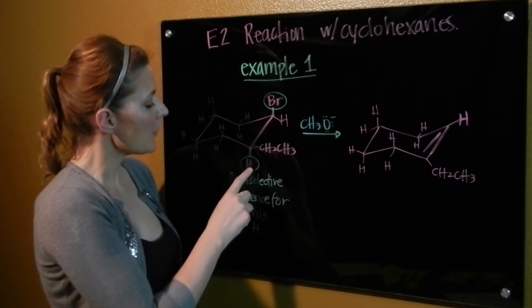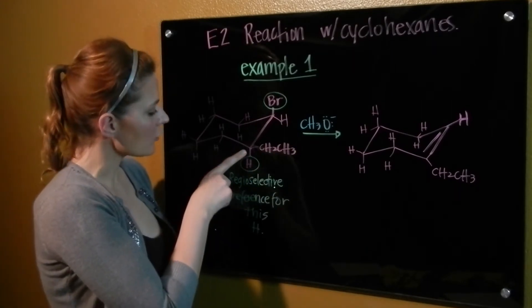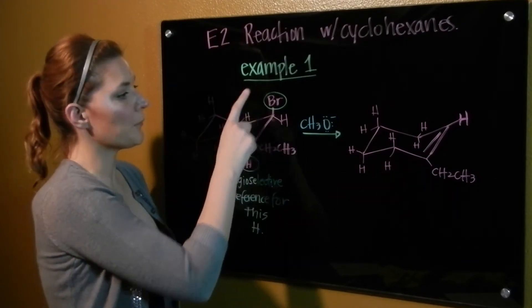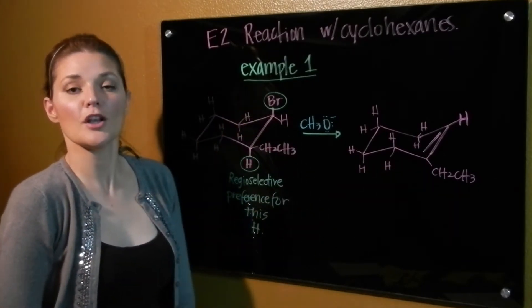So my base comes, pulls off the hydrogen, the electrons in this bond fall and form the double bond that we see in the product over here and the bromine group gets kicked off.